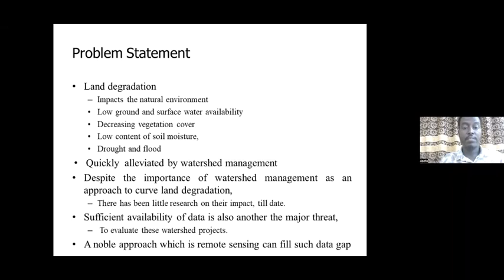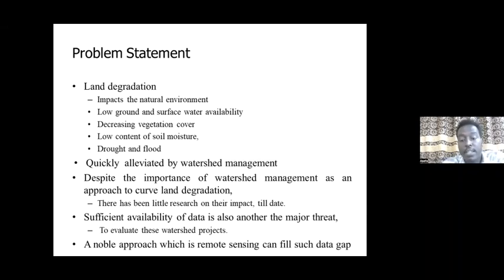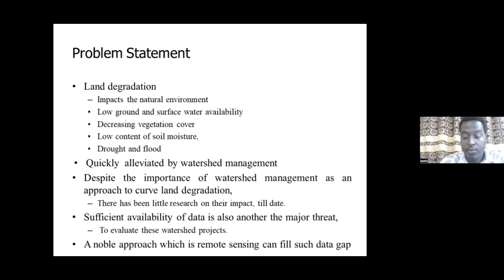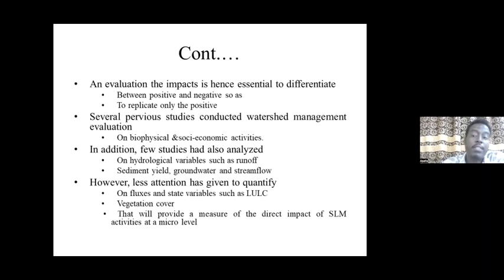As the problem statement indicates, land degradation decreases vegetation cover, impacts soil moisture, causes droughts, and is addressed by watershed management activities. Despite the importance of watershed management as an approach to curbing land degradation, there has been little research on its impact, mainly due to insufficient available data and lack of scientific knowledge. Remote sensing is used to fill such data gaps. Watershed management impact assessments are essential to differentiate positive and negative impacts in order to replicate only the positives.